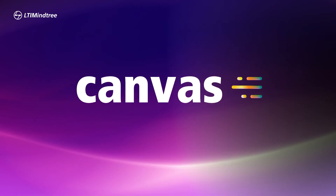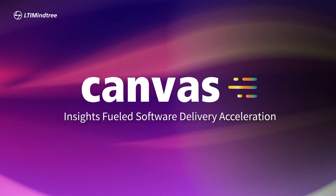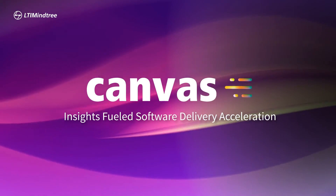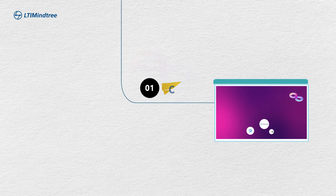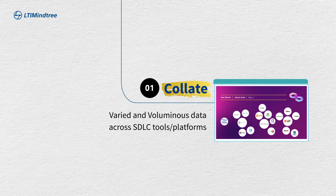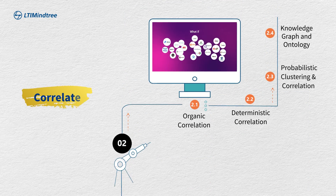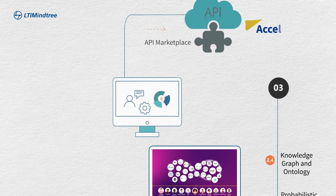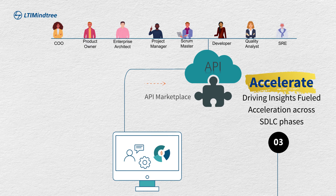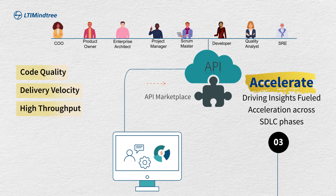Canvas is an AI-powered platform that enables insights-fueled software delivery acceleration across the SDLC lifecycle. It starts by collating data across your SDLC cycle. It uniquely applies AI techniques — particularly natural language processing, deterministic tracing techniques, knowledge graph, and ontology — to build an end-to-end correlated and clustered knowledge fabric. It then enables delivery of first-time right and resilient applications faster, with step improvements in code quality, delivery velocity, and high throughput.